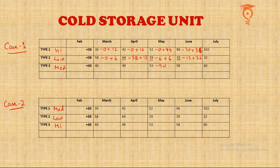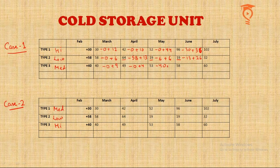If Type 3 is medium quality, the ones added end of February will be disposed at end of May. For the first two months nothing is subtracted. From 40 to 49 is 9 added; 49 to 53 is 4 added. Then 40 are subtracted leaving 13; we add 45 to reach 58. From 58, the 9 added in March is subtracted leaving 49, then 11 is added to reach 60.